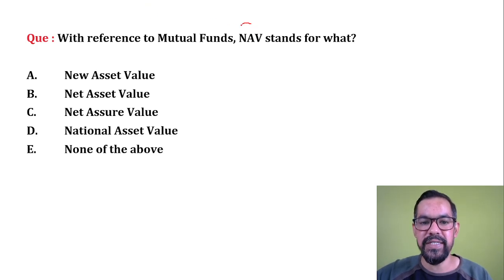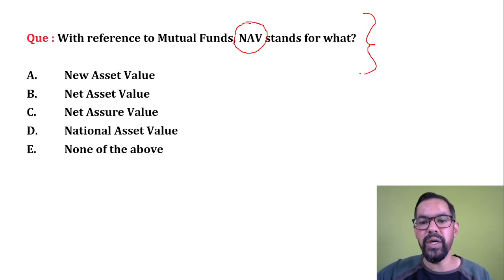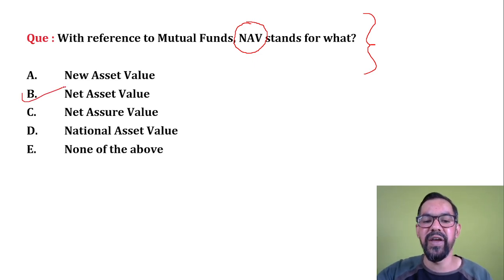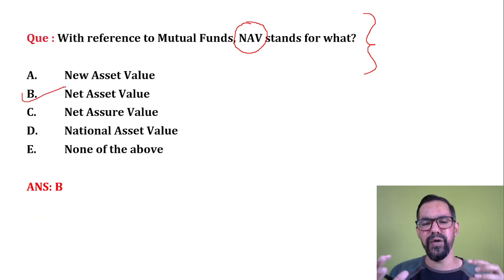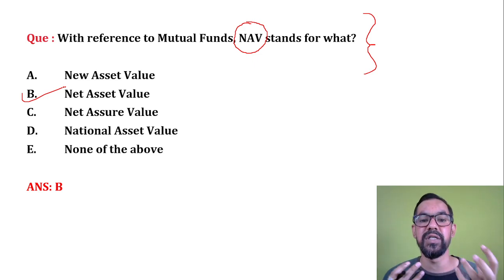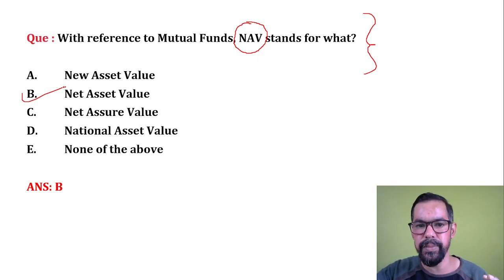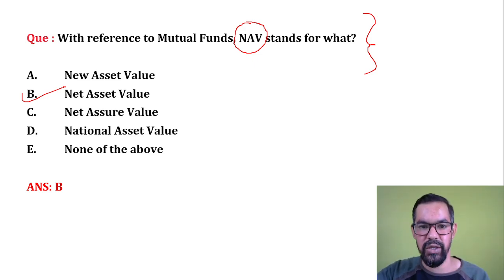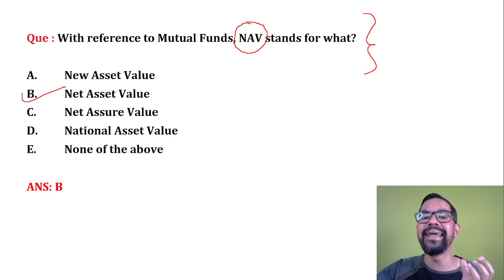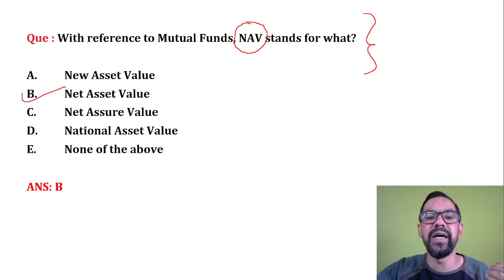Next question: with reference to mutual funds, NAV stands for Net Asset Value. This is the current market price of any mutual fund. The formula is straightforward: total fund minus liabilities, divided by the number of outstanding units. On the basis of this formula, we calculate the current NAV of any mutual fund.